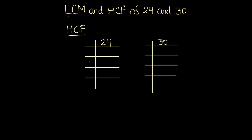So first we will divide 24. As it is even, we can divide it by 2. 2 times 12 is 24. Again we can divide by 2 — 2 times 6 is 12. And again: 2 times 3 is 6, and 3 times 1 is 3. So the prime factors of 24 are 2, 2, 2, and 3.